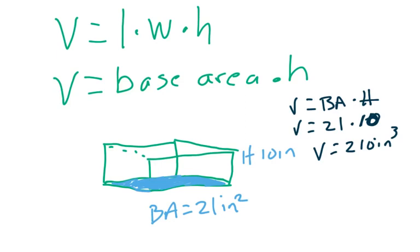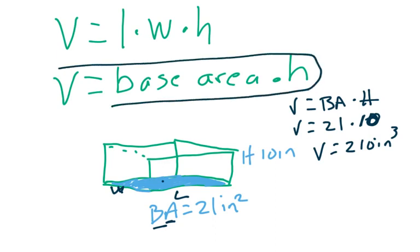Because if you think about it, how would base area here be calculated? Well, you would multiply length here times the width, right? Length times width gives you area. So, base area is the same thing as length times width. So, that's just one more way that you can find volume, and this is another formula that can be used to calculate volume of a rectangular prism.